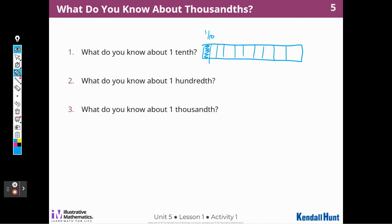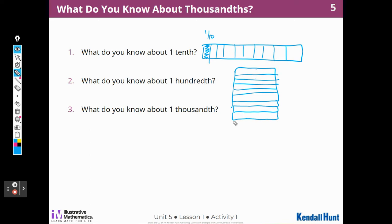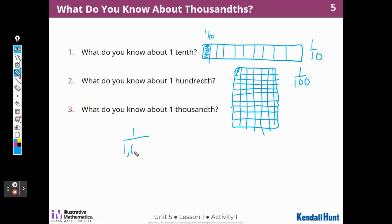And what do I know about one-hundredth? If I had a square with ten columns and ten rows going down — ten times ten — that little piece right here would be one-hundredth. It's one out of a hundred pieces. And one-thousandth would be one out of one thousand — a square with a thousand pieces, and it would be one little piece out of that.